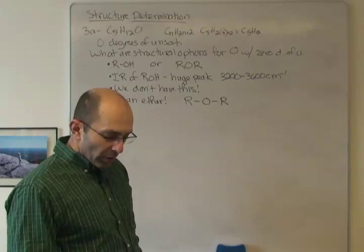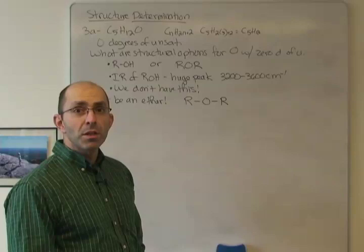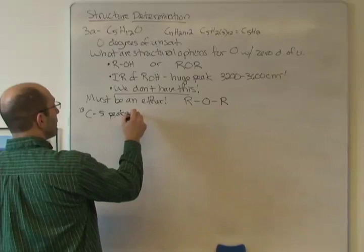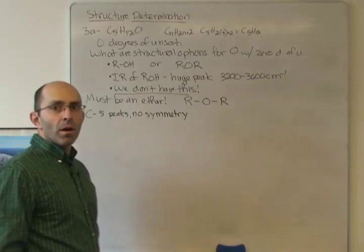If we look at the C13 NMR, we have one, two, three, four, five peaks, so there's no symmetry. So again, IR, we don't have an alcohol. C13 NMR, we have five peaks, no symmetry. Okay, that's all we need to get from the C13 NMR. Now we can focus on the proton NMR.